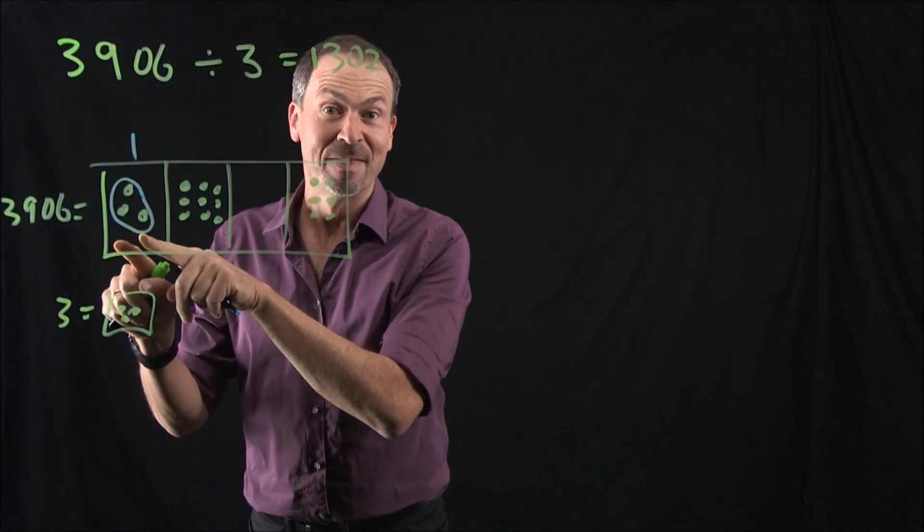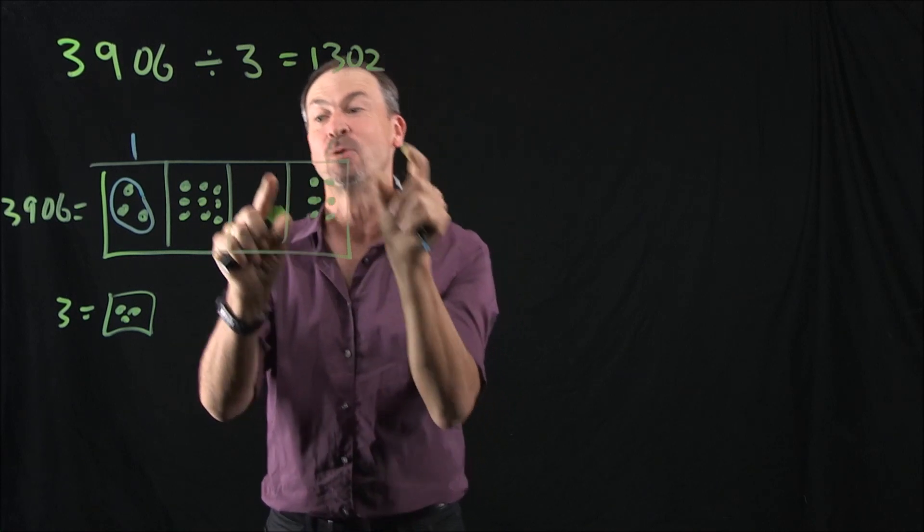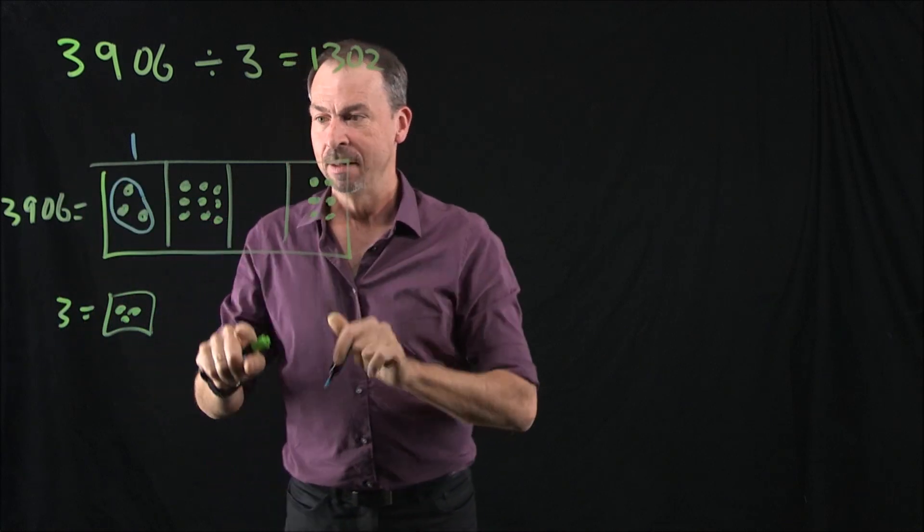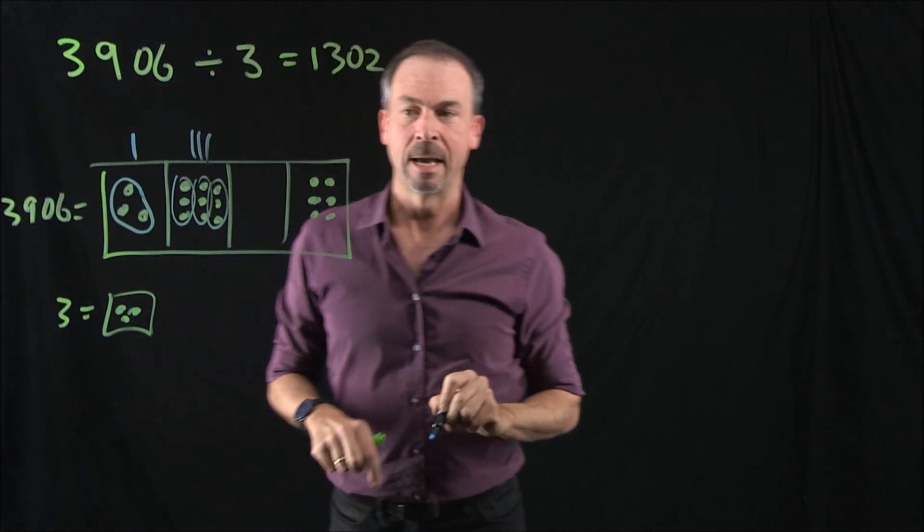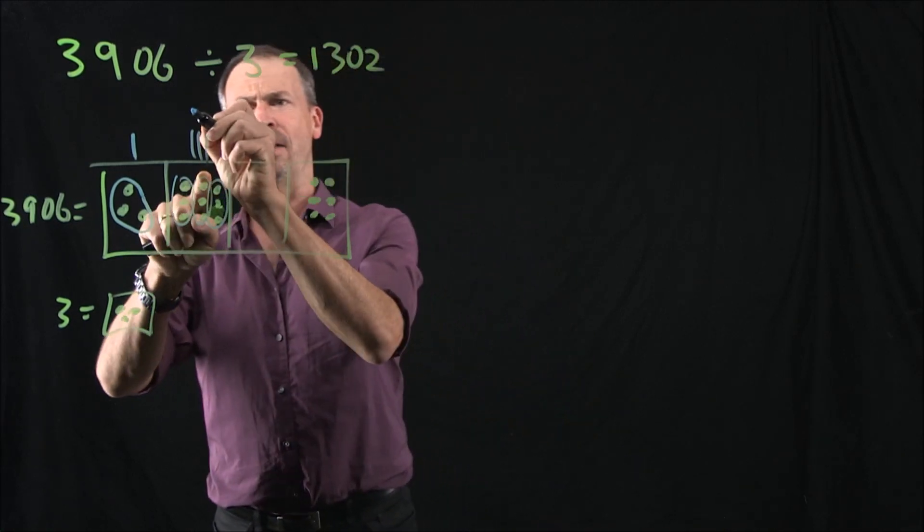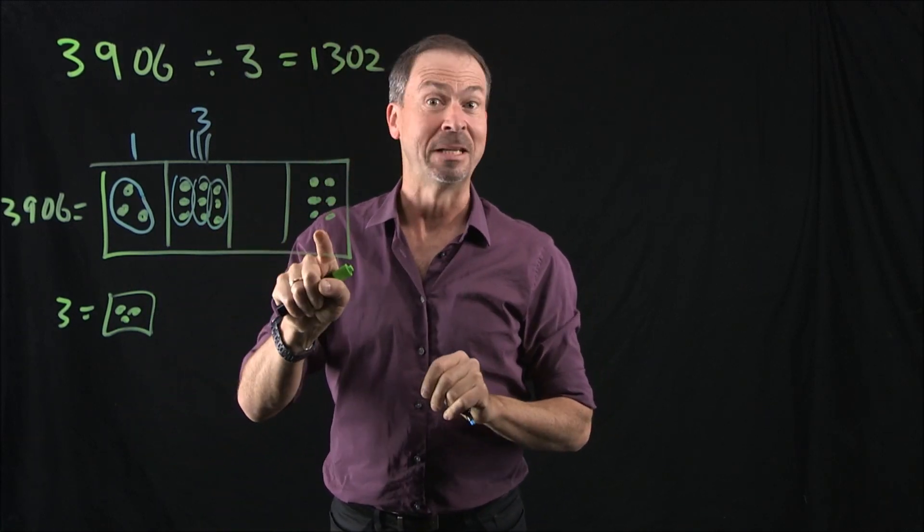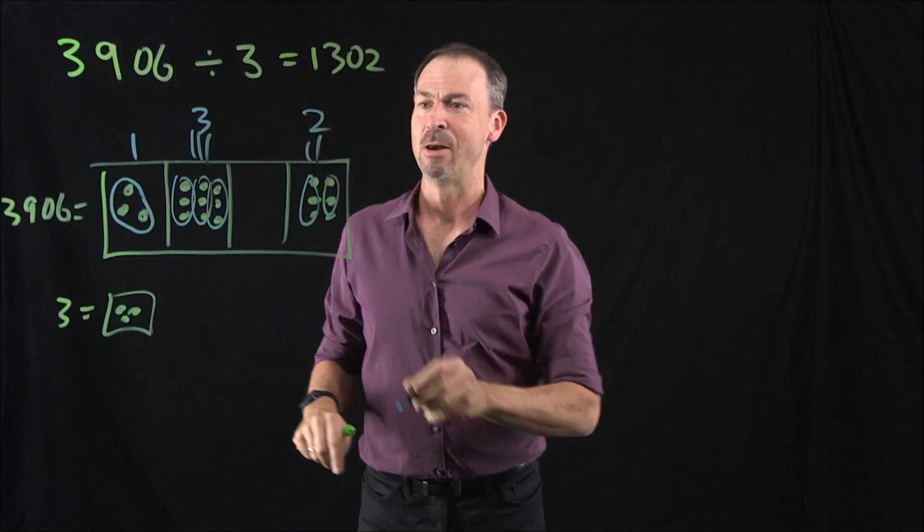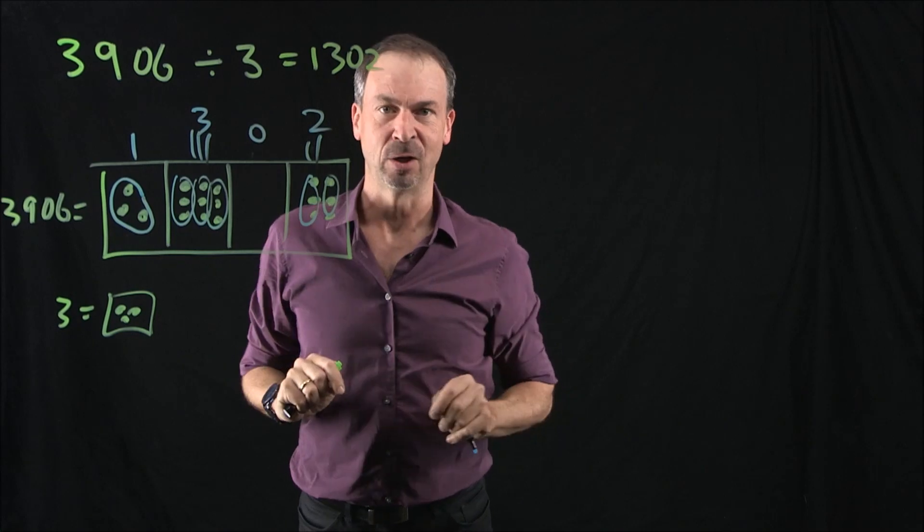Now that really is actually 1,000 groups of three, because I did all the unexplosions. There'd be 1,000 groups of three there, they all just exploded over here. So there's one group of three at the thousands level. There's also actually three groups of three at the 100 level. Do I see any groups of three at the tens level? No. Do I see any groups of three at the ones level? Yep, I see two at that level. And look at that. I see 1, 3, 0, 2. The answer to the division problem.